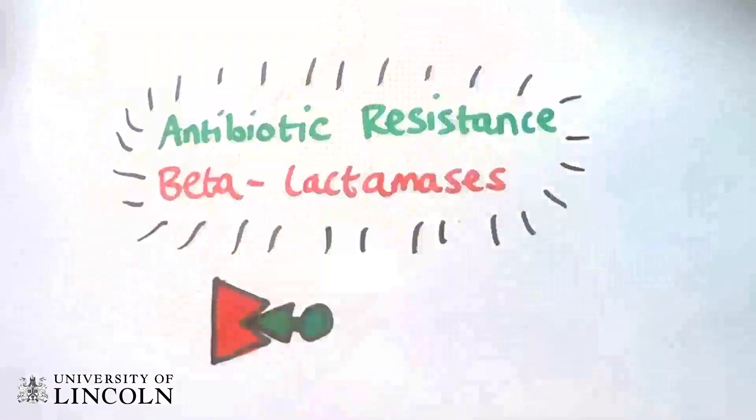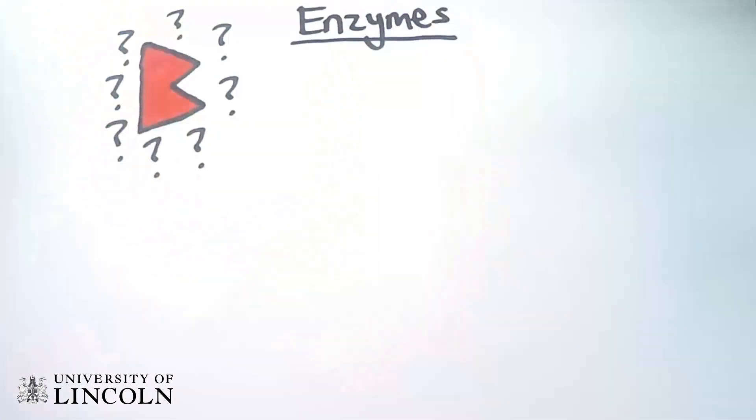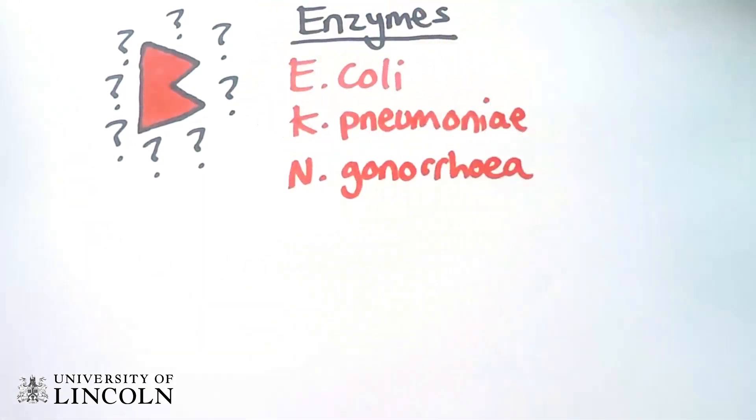Welcome to this video on beta-lactamase antibiotic resistance. So what are beta-lactamases? They are a family of enzymes found in bacteria such as Escherichia coli, Klebsiella pneumoniae, Neisseria gonorrhea, and Pseudomonas aeruginosa.